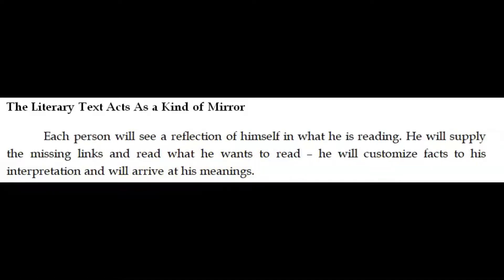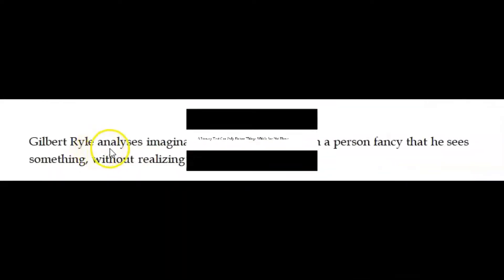He will naturally supply the missing links and read what he wants to read, interpreting the text from his perspective — just like what we do in real life, we understand things in the way we want to understand. The reader will customize facts to his interpretation and arrive at his own meanings. A literary text can only picture things which are not there, says Iser.